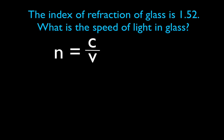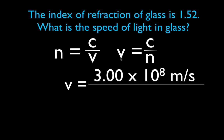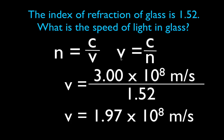You can also calculate the actual speed of light through a material if you're given the index of refraction. Rearranging the equation, V equals the speed of light divided by the index of refraction. So V equals 3.0 times 10 to the eighth meters per second divided by 1.52, giving the speed of light in glass as 1.97 times 10 to the eighth meters per second. Those are the two main calculations: if you want N, divide C by V; if you want V, divide C by the index of refraction. The higher the index of refraction, the lower the velocity of light through that material.